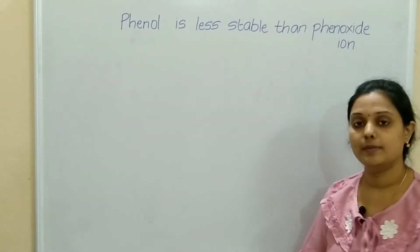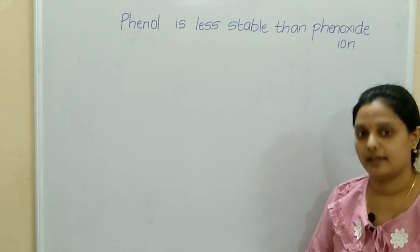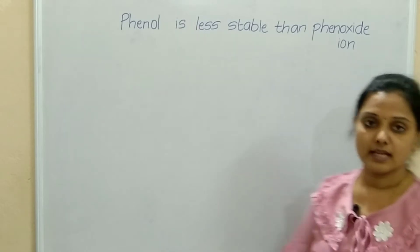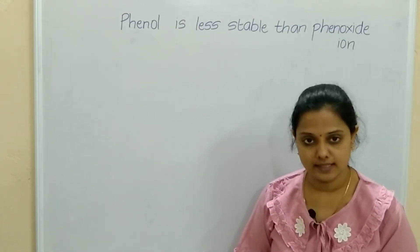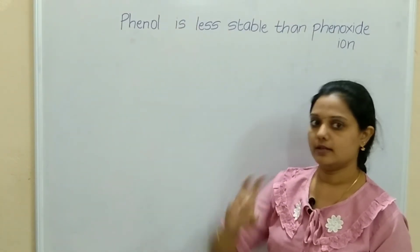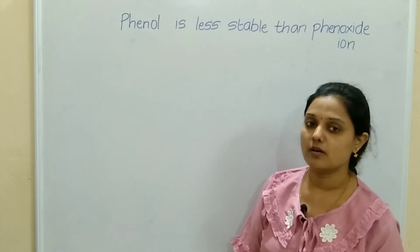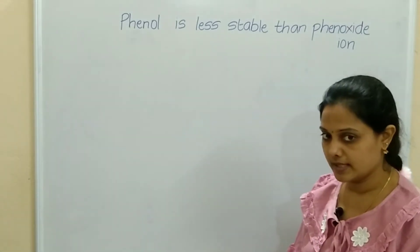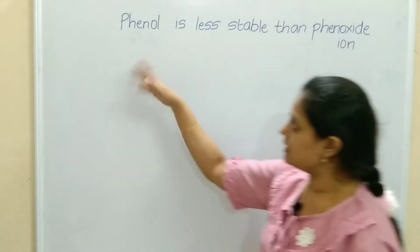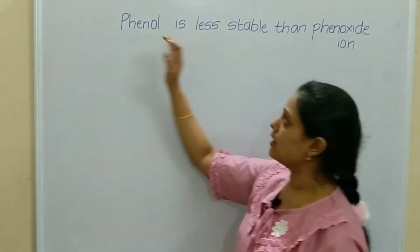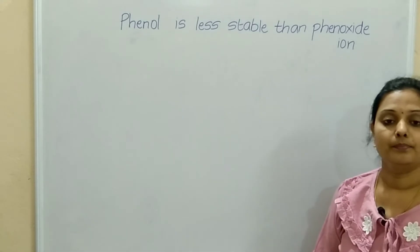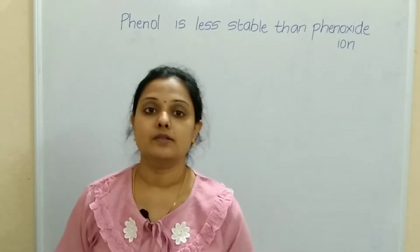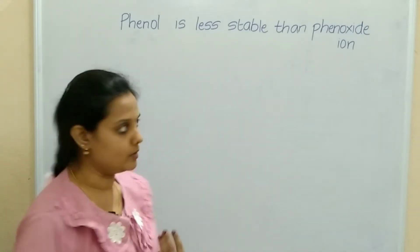Phenol is less stable than phenoxide ion. Phenoxide ion means if hydrogen is released, oxygen will be present on the benzene ring — that is phenoxide ion. Phenol has OH present on the benzene ring. The statement is: phenol is less stable than phenoxide ion. The main reason is resonance — because of resonance.